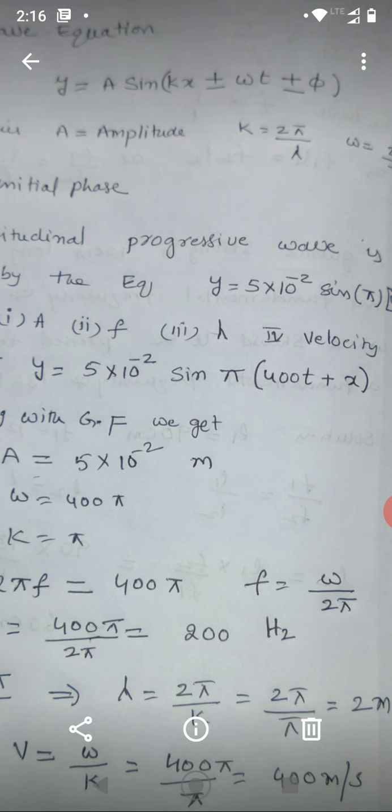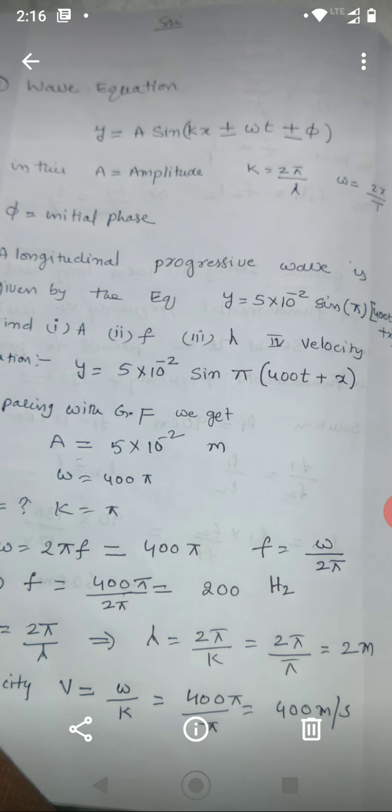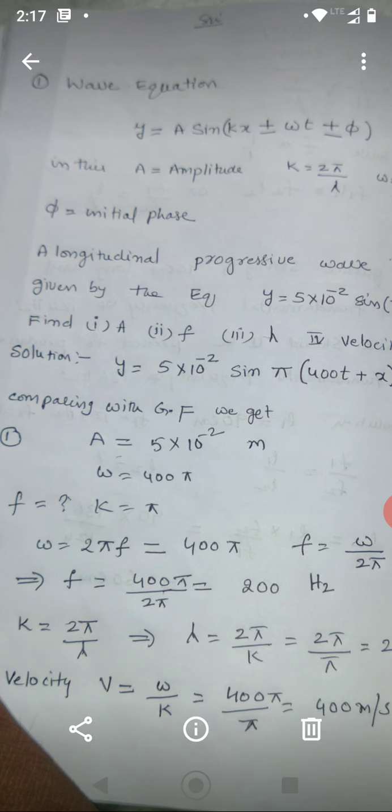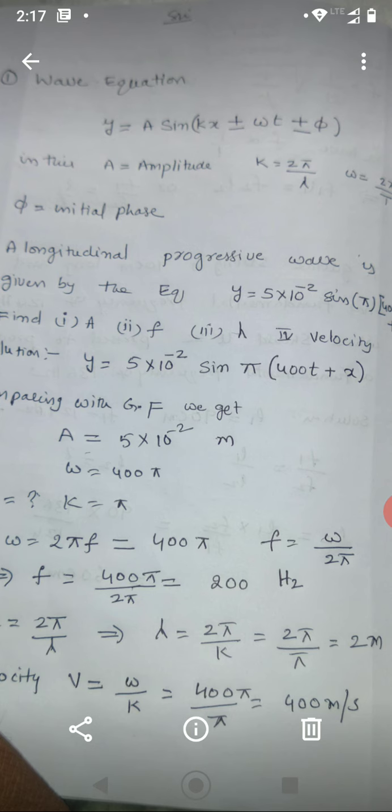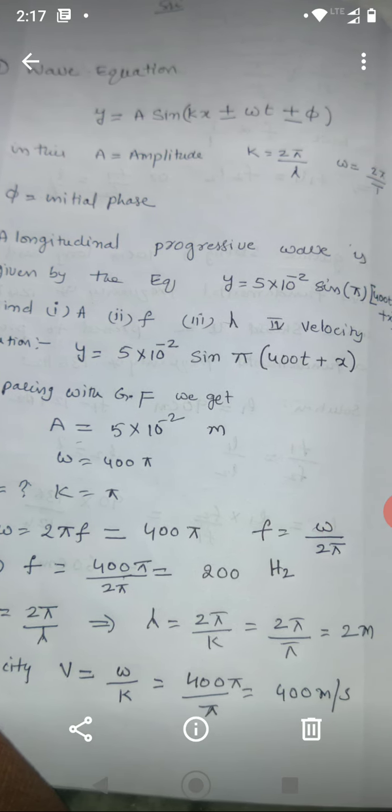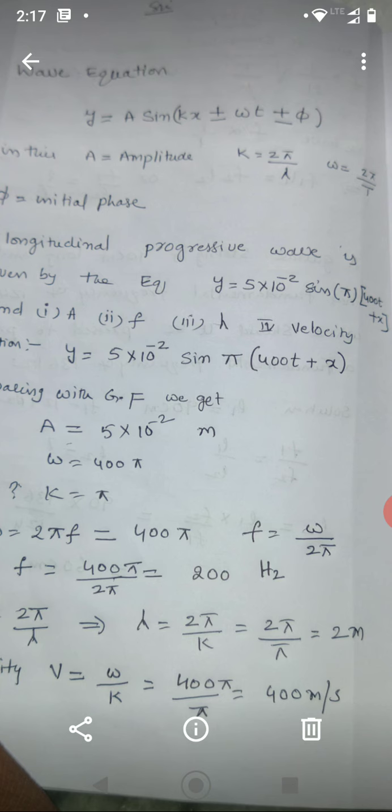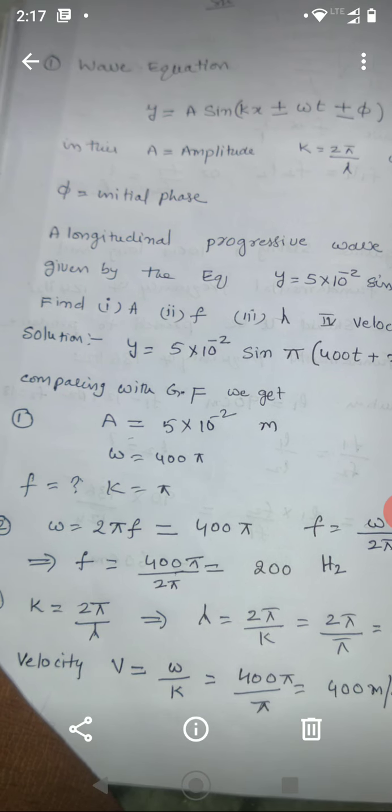Now, which type of questions are going to ask in the IIT or NEET exam. Observe this example. I am reading the question. Please concentrate. A longitudinal progressive wave is given by the equation y equals 5 times 10 to the power of minus 2 sin pi times 400 t plus x.